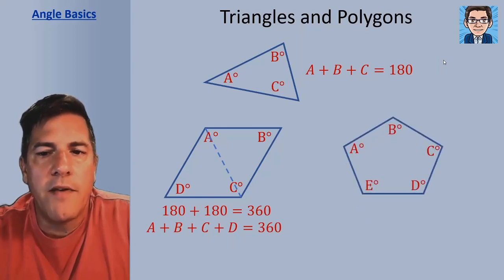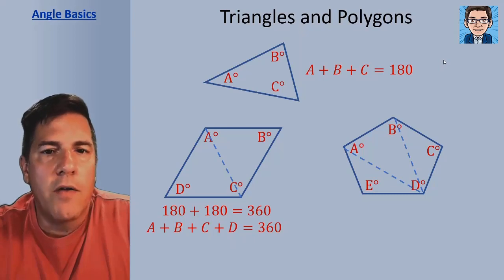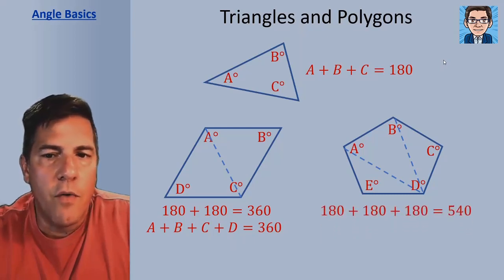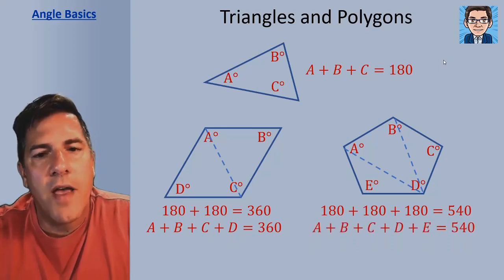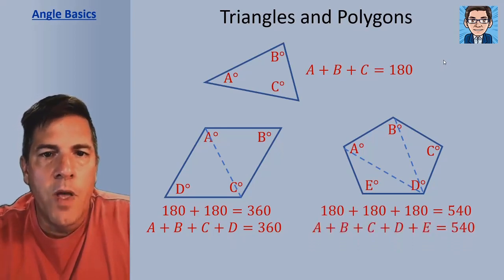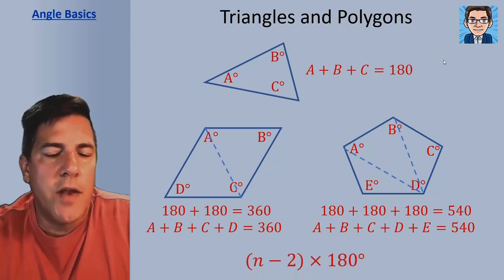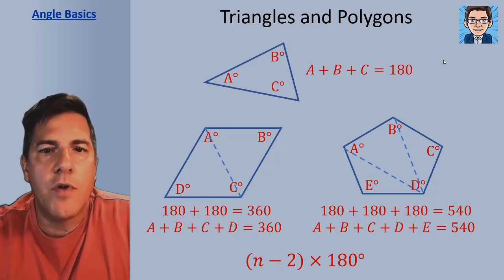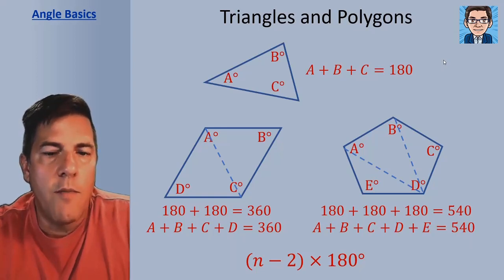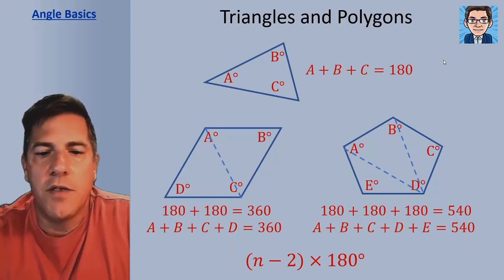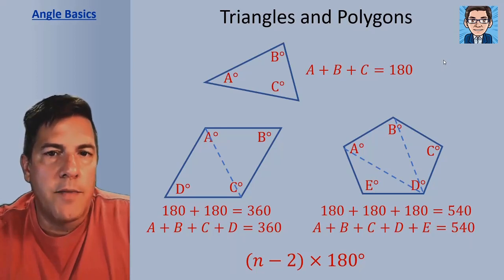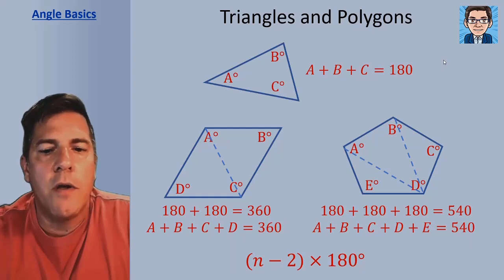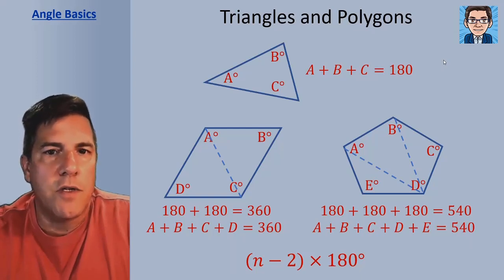What about a pentagon? A pentagon can be divided into three triangles, so the total angles are going to be 180 times 3, or 540. So those five angles add up to 540. As a general equation, we take the number of sides minus two — that's the number of triangles you can form — and multiply that times 180. So n minus 2 times 180 gives us the same answers in both cases.